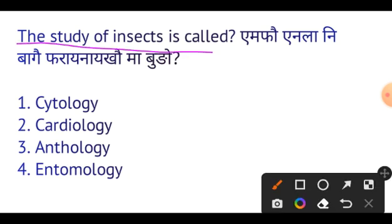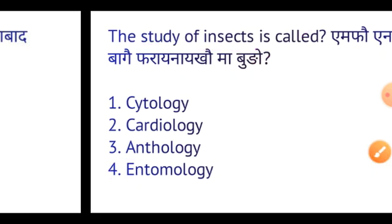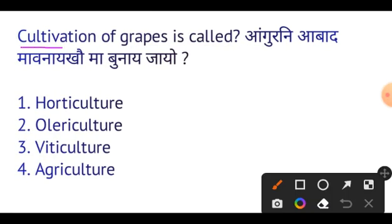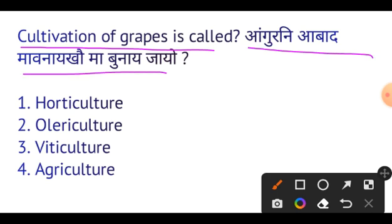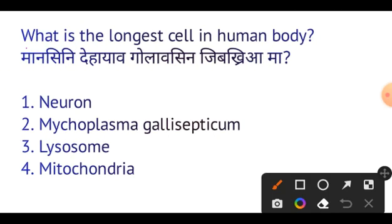Next question: The study of insects is called Entomology. Next question: Cultivation of grapes is called Viticulture. Viticulture is the cultivation of grapes — important.